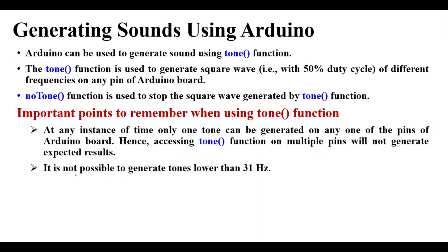It is not possible to generate tones lower than 31 Hz using the tone function. The lower limit is 31 Hz, and the higher frequency is dependent on our hearing, which is 20 kHz. We can go higher, but it will not give any impression of sound because we cannot hear beyond 20 kHz. So the lower frequency range is 31 Hz.